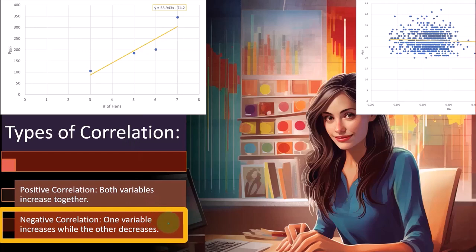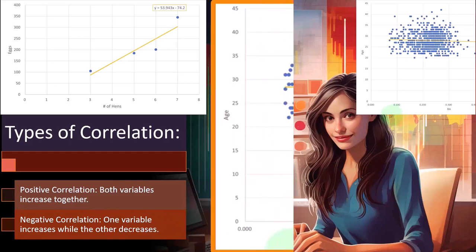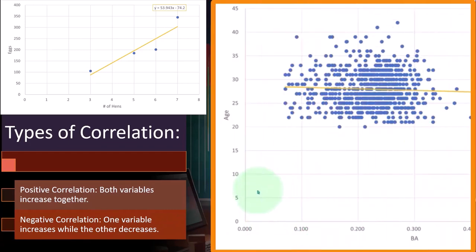Correlation: one variable increases while the other decreases. So in this case, we're talking about age and batting averages. The age of a baseball player is going up, and as the age of the baseball player is going up, the batting average goes down.